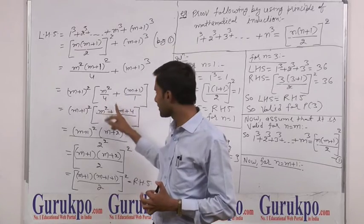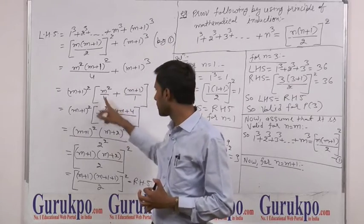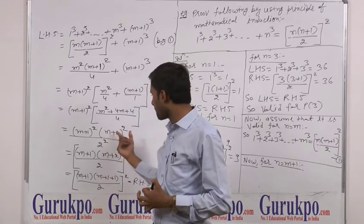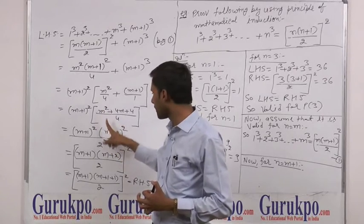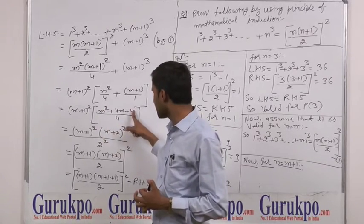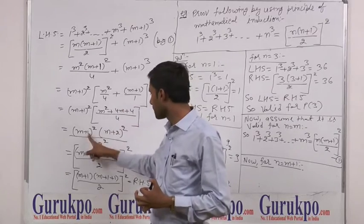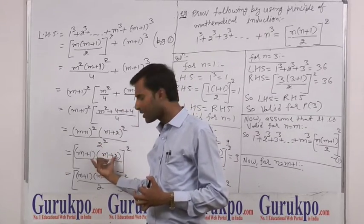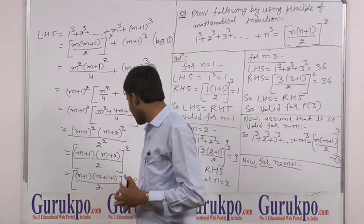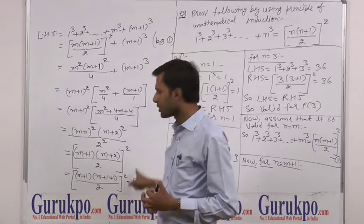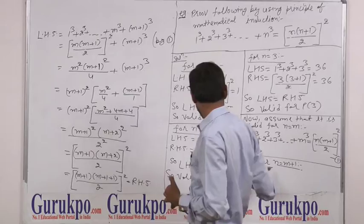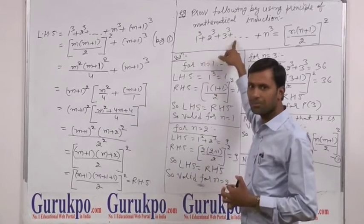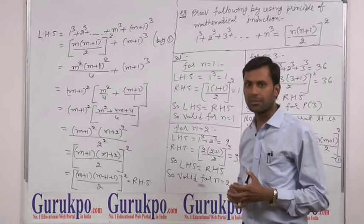Taking LCM equal to 4, the remaining expression simplifies. Using the identity (a+b) whole square equals a squared plus b squared plus 2ab, we get this expression equal to (m+1)(m+2)/2 whole square. That is equal to our RHS. So the statement is valid for m plus 1, and therefore the given expression is valid for any natural number.